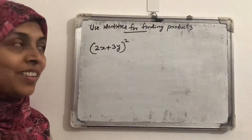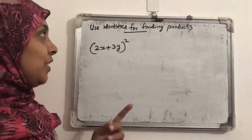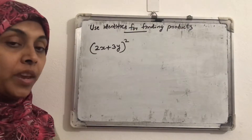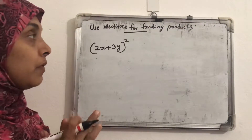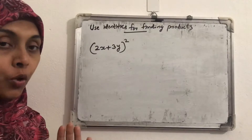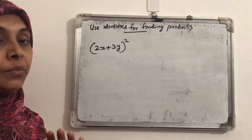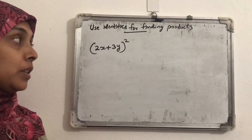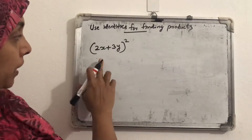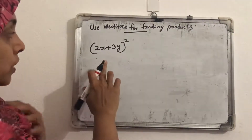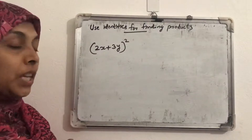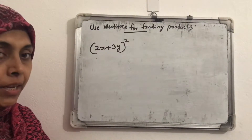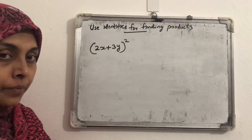Good morning all. Today we will look at using identities — how we can simplify or find out the product of some binomials. When we find out (2x + 3y) whole square, without using identities, how will we find out this product?